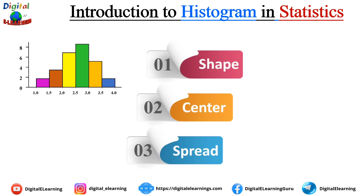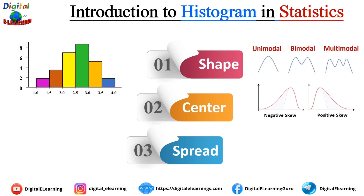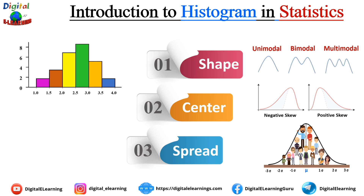A histogram can help us visualize the shape, center, and spread of data. For shape, we can see whether it is unimodal, bimodal, or multimodal. For center, we check if it is centrally distributed like a normal distribution, or if it is negatively skewed or positively skewed. We also examine how the spread of the data looks. This is important in understanding patterns, trends, and outliers in your data — and shows whether the data is normally distributed or skewed.